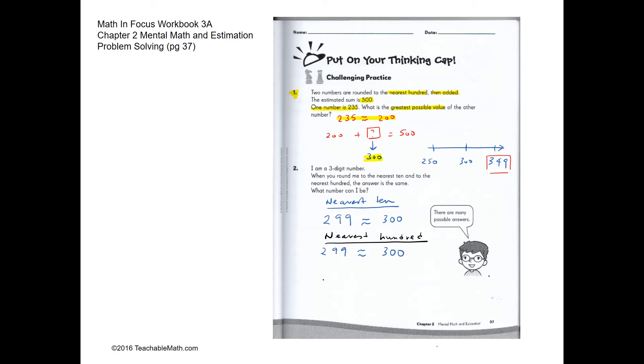If you put 300 on a number line, the smallest number that could be rounded to 300 when rounded to the nearest hundred is 250. And the greatest possible number that can be rounded to 300 is 349. So the answer is 349.